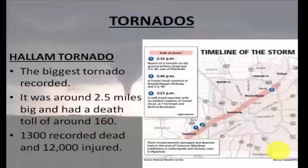The biggest tornado ever recorded was the Hallam tornado, which occurred on May 22nd, 2004, near Hallam, Nebraska. It is recognized as the second largest known tornado, peaking at 2.5 miles wide. The storm was long-lived, having been on the ground for more than 100 minutes, and was a long-track tornado covering 52 miles. A total of 1,300 people were recorded dead and 12,000 people were injured.